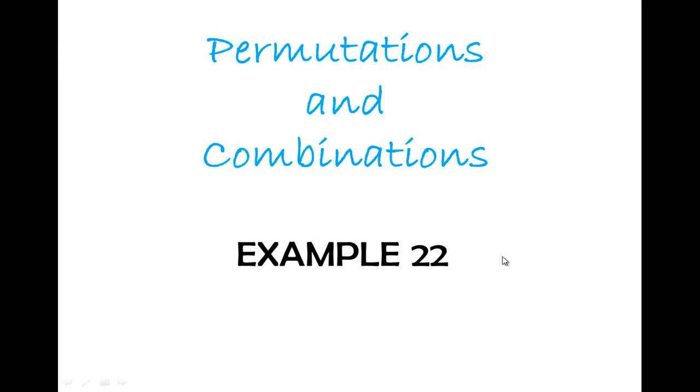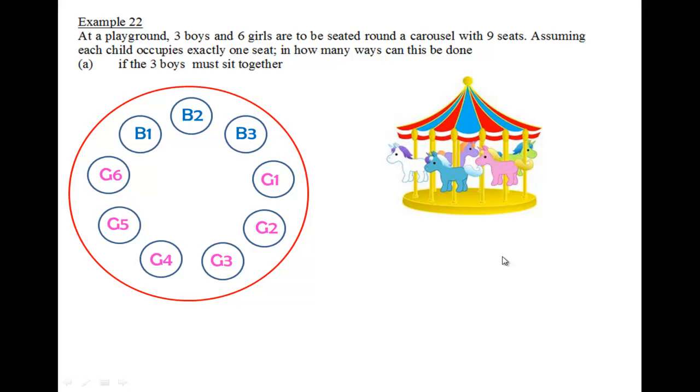Let's look at example 22. At the playground, 3 boys and 6 girls are to be seated round a carousel with 9 seats, as illustrated in the diagram here. Assuming that each child occupies exactly one seat, in how many ways can this be done if the 3 boys must sit together?